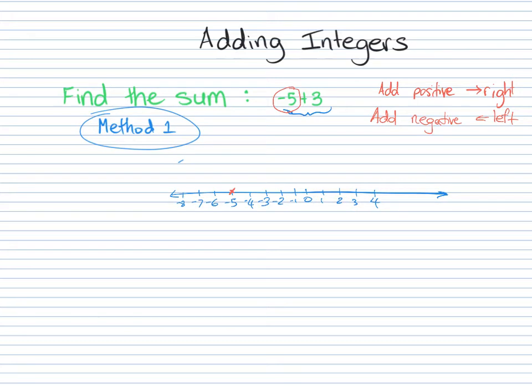So in this case we are adding a positive integer, we're adding 3 which is positive. So that means we're going to move to the right. We're going to move to the right three places. So we jump 1, 2, and 3, and we end up here at negative 2. And that's our answer. That's method one for adding integers. We'll look at subtracting in another video. But for now, let's look at another method.